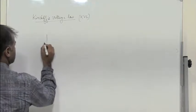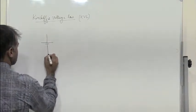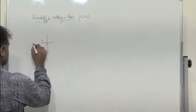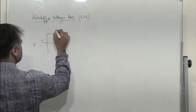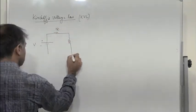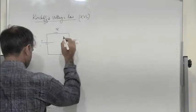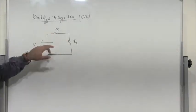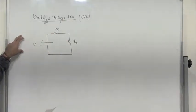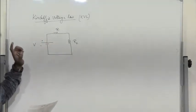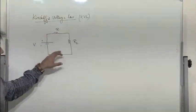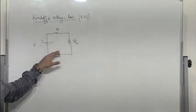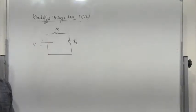Let us take a network with a voltage source V, a resistor R1, and another resistor R2. KVL states that the algebraic sum of voltages in any closed part of a network traversed in a single direction is zero. If you know how to write the KVL equation for any given circuit, half of our problems are solved.